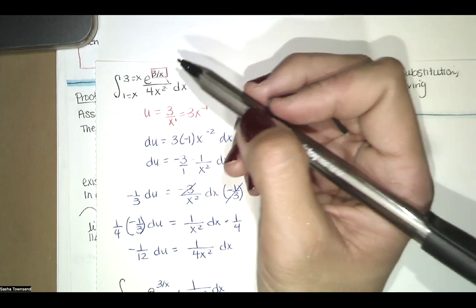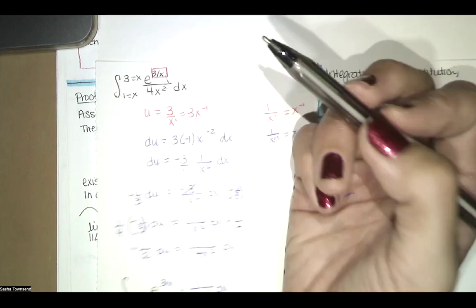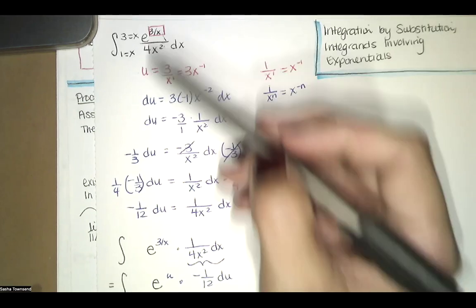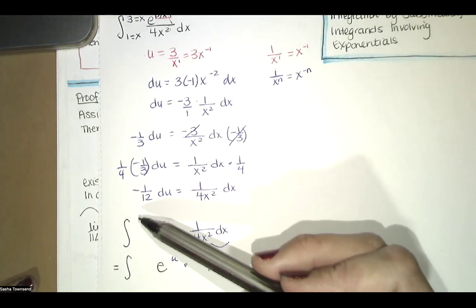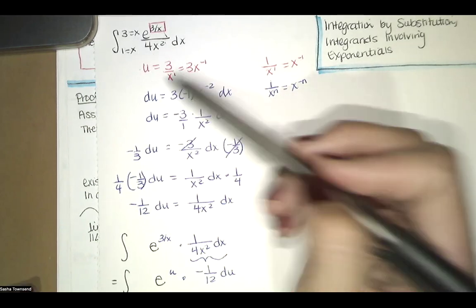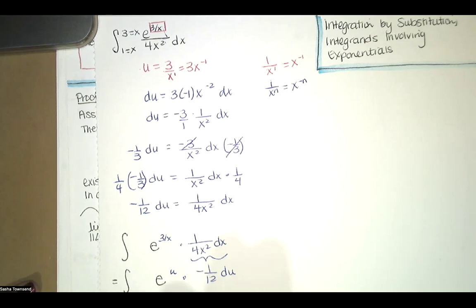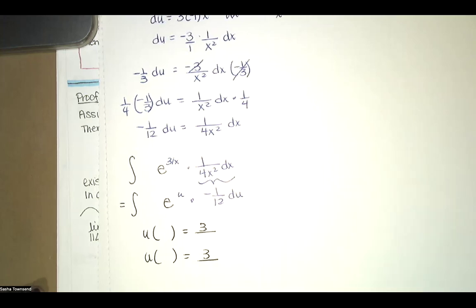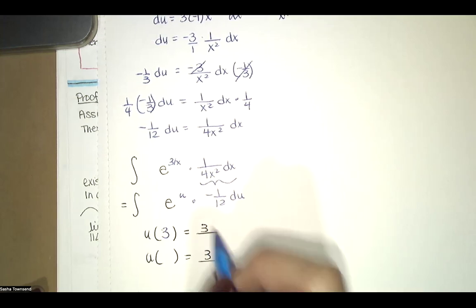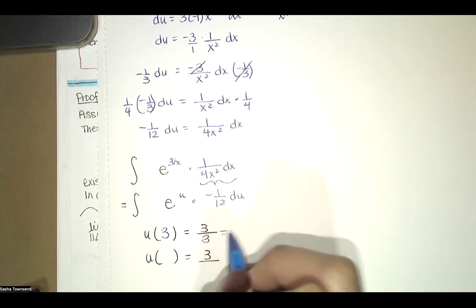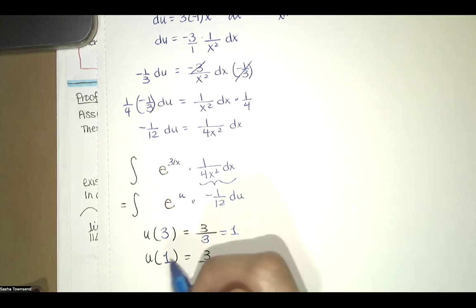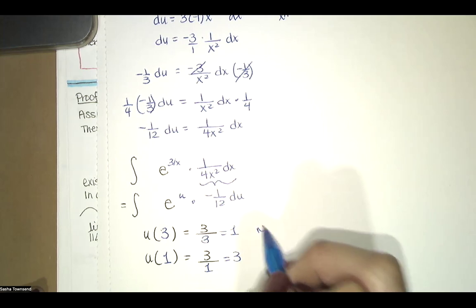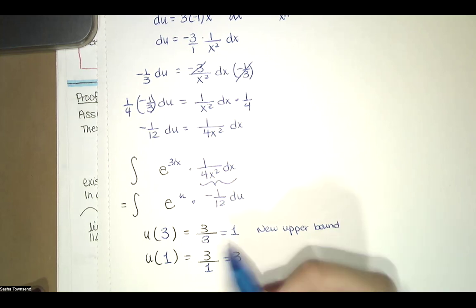Since this function is positive the whole time, it's the area between the y-axis and the function on the interval from x equals 1 to x equals 3. That integral in terms of x is equivalent to our integral in terms of u — we just need new bounds. To find the bounds for u, we substitute the x-bounds into u = 3/x. The upper bound x = 3 gives u = 3/3 = 1, and the lower bound x = 1 gives u = 3/1 = 3. So our new upper bound is 1 and our new lower bound is 3.